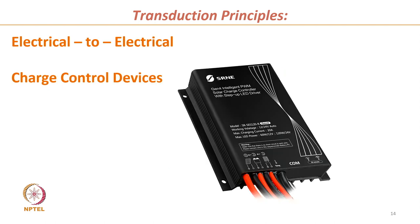Electrical-to-electrical transduction has both input and output in the form of electrical signals. An example is a charge controller device, widely used in solar panels where solar panels generate electrical charge from sunlight and this charge is controlled by these devices. These are charge control devices and represent electrical-to-electrical transduction.